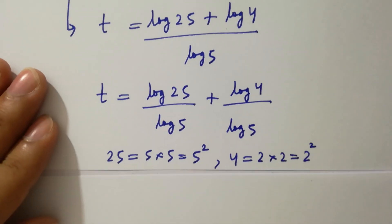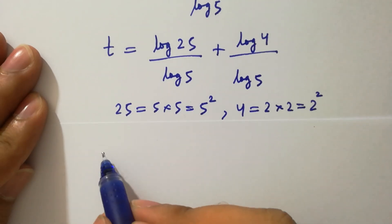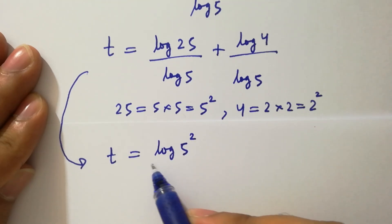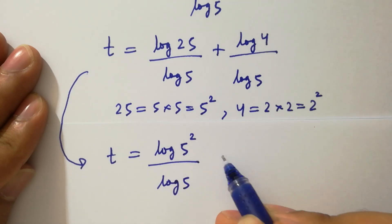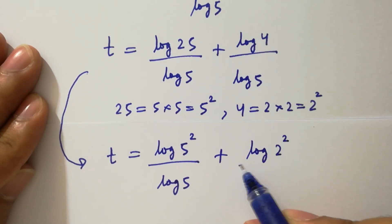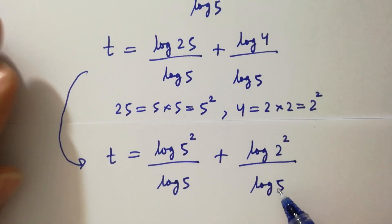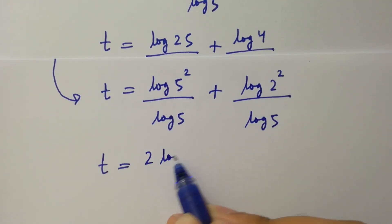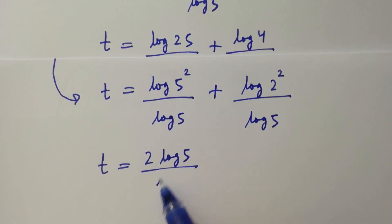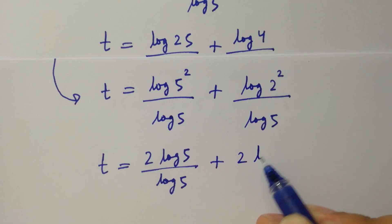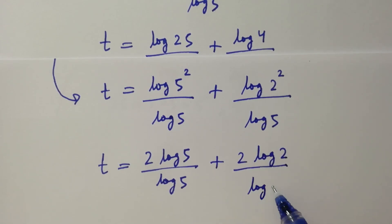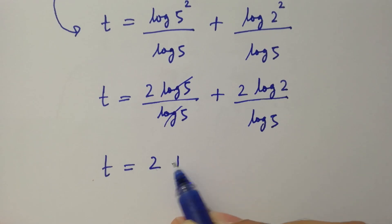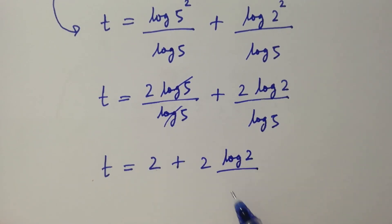Substituting, t equals log(5²) over log 5 plus log(2²) over log 5. Applying the power rule, this becomes 2 log 5 over log 5 plus 2 log 2 over log 5. Since log 5 cancels in the first term, t equals 2 plus 2 log 2 over log 5.